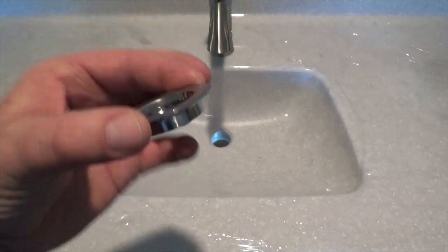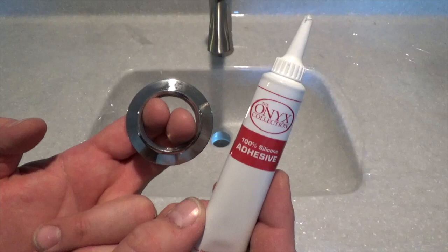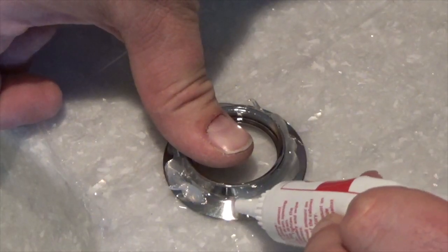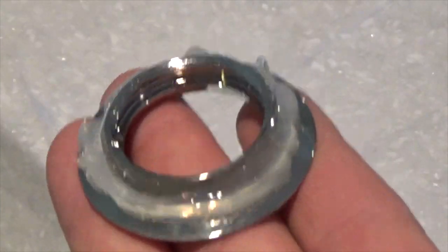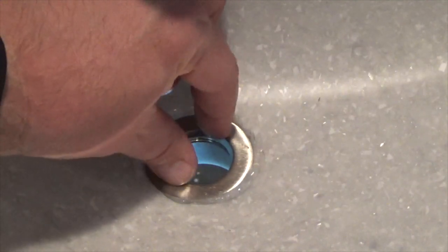Next, take the waste seat, also called a flange, and apply a liberal amount of sealant. I'm using 100% silicone adhesive. Place the flange into the sink drain opening and press into place.